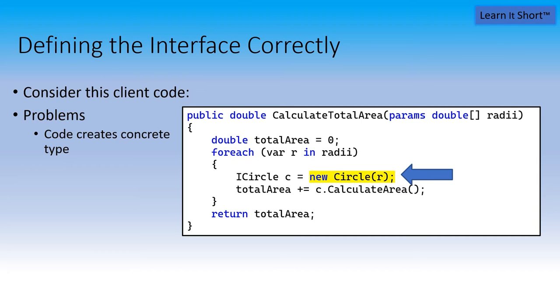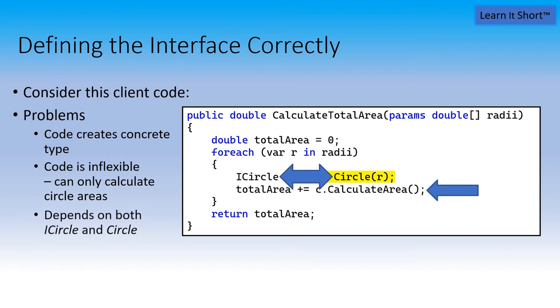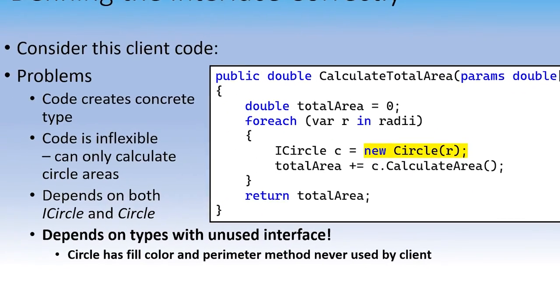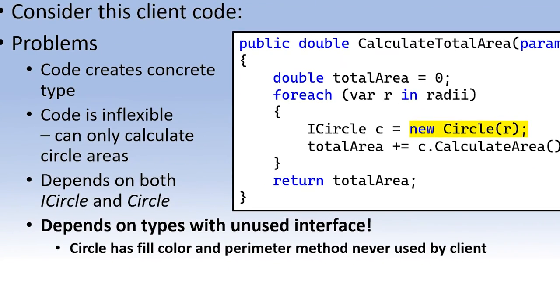If you're newing something, you're very inflexible. So the code's creating a concrete type. It's inflexible because it can only calculate the area of circles. We also have the fact that this is dependent on both the interface and the concrete type. We also have a bigger problem. And this is something that escapes a lot of design. Our code calculate total area is dependent on a type, in this case, circle and icircle that has methods that are never used by our calculate total area.